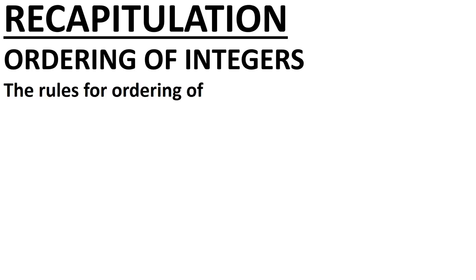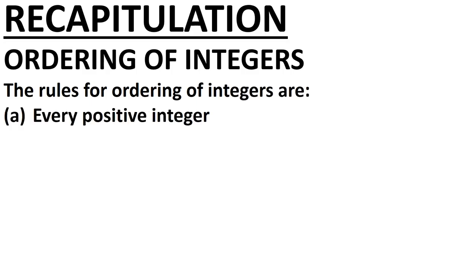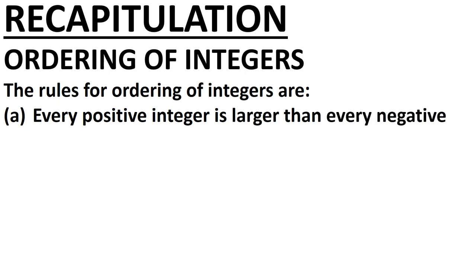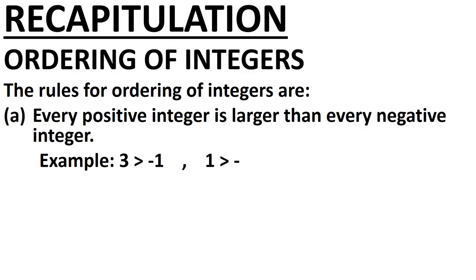The rules for ordering of integers: Rule a — every positive integer is larger than every negative integer. So we can say that 3 is greater than minus 1, 1 is greater than minus 5, and minus 20 is less than 2. Every positive integer is greater than every negative integer.